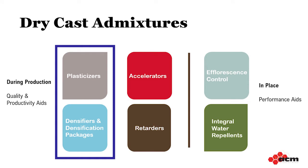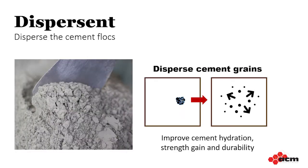Let's start with quality and production aids — plasticizer or densifier. Most dry cast production plants will use a plasticizer or densifier, and this category covers a lot of ground. Generally, these products help do a couple of things. First, they help to disperse the cement grains for proper hydration, to get the most strength possible from a given amount of cement, which helps reduce cost.